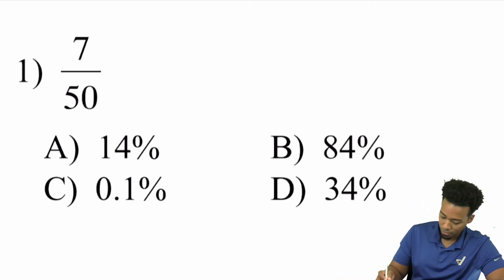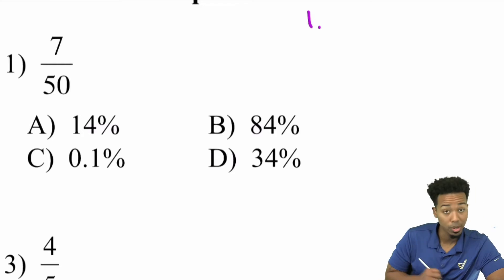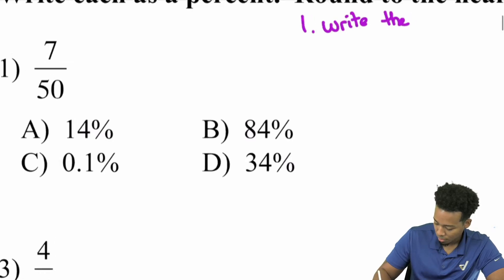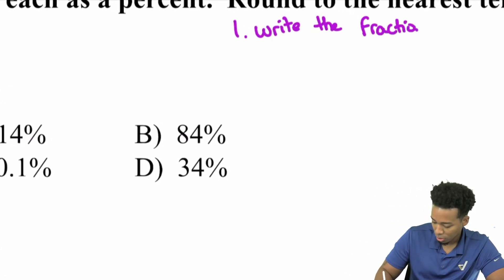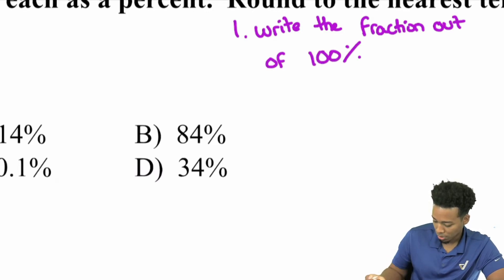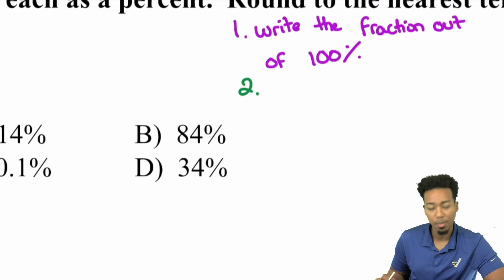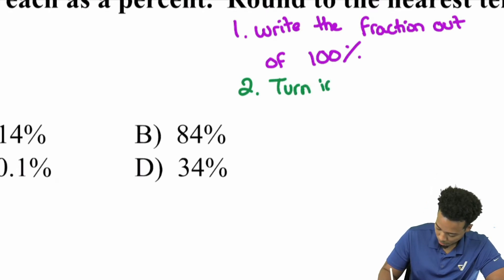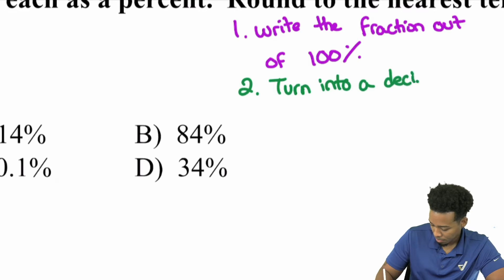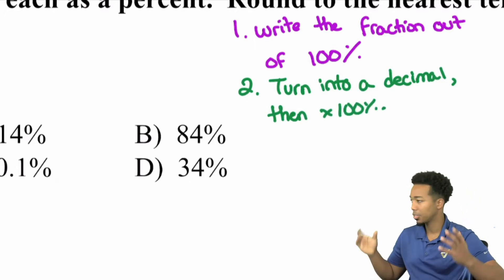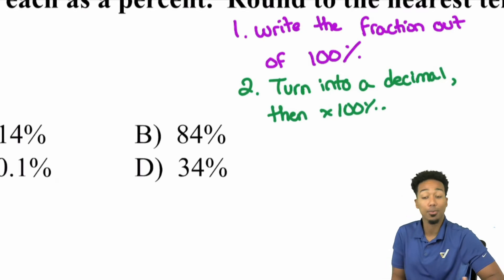Write this down if you need to. Method number one: write the fraction out of 100. Method number two: turn into a decimal, then multiply by 100%. Either way works because they're both really the same idea.